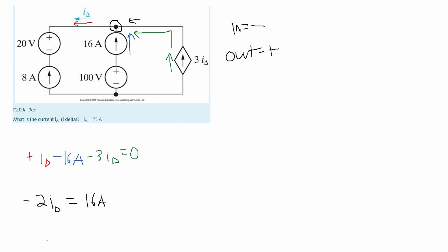Then I'm going to divide this and this will give me an I is equal to a negative eight amps. So I delta is equal to negative eight amps and that is the answer for this problem.